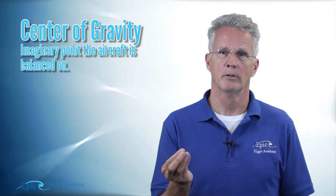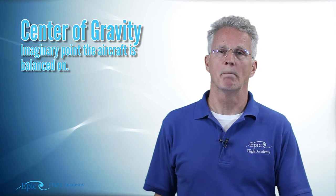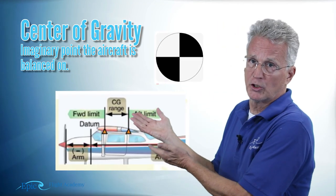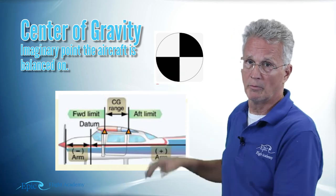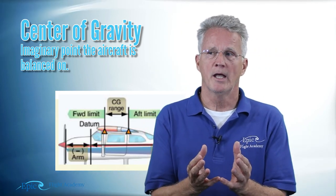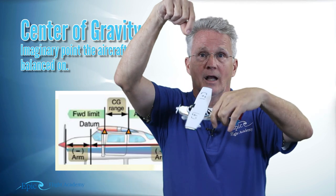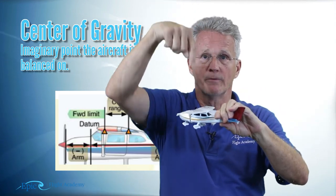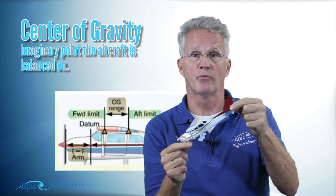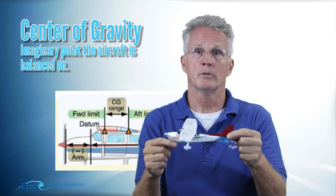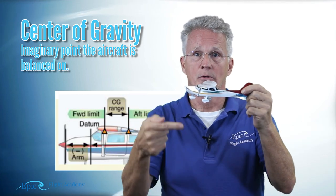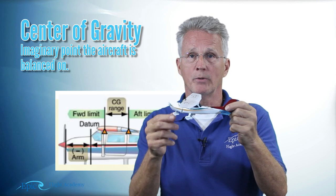Let's start with some common terms. First of all, center of gravity itself. Center of gravity is an imaginary point where the aircraft is balanced. Imagine taking the center of gravity symbol — a circle cut into four quadrants with two of them blacked out — with a string tied to it, and your aircraft balancing on the end of that string. Center of gravity balance is fore and aft, side to side, and vertically up and down.